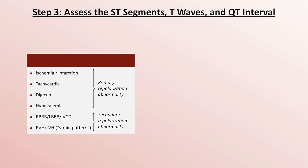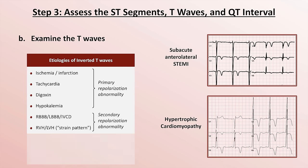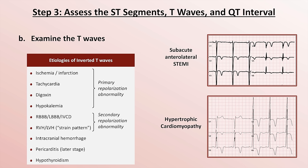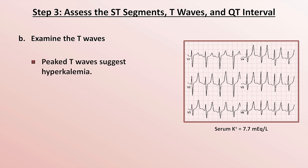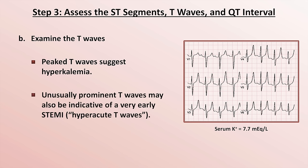When looking at inverted T waves and their etiologies, the list is nearly identical to that of ST depressions, with just a couple of rare additions: intracranial hemorrhage, late-stage pericarditis, and hypothyroidism. Remember that isolated T wave inversions in leads III, aVR, and V1 are common and normal. The only other significant T wave abnormality to look for is peaked T waves, which suggest hyperkalemia. An acute STEMI can occasionally cause a similar morphology very early on before ST elevation develops — called a hyperacute T wave — but this is rare to see because the patient has usually already transitioned to the ST elevation phase by the time they are seen by medical personnel.